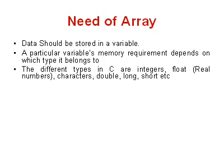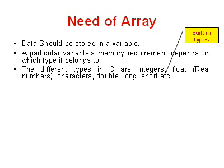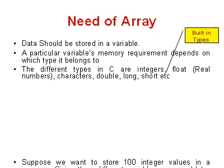The different types in C are integer, float, character, double, long, short, etc. Of course these are built-in types.